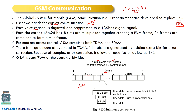For medium access control, GSM uses both TDMA and FDMA schemes. There is a large amount of overhead in TDMA — 114 bits are generated by adding extra error control bits. These 114 bits consist of user data and the error control bits required for correction at the receiver.